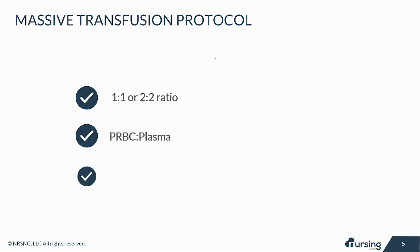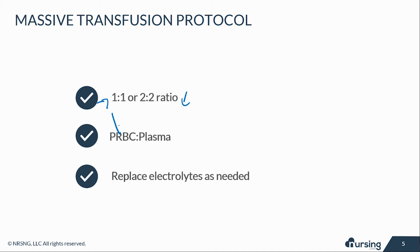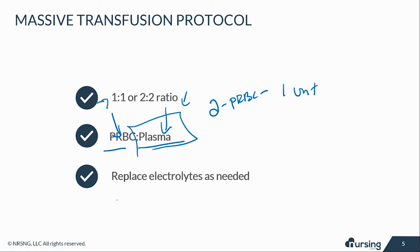As soon as you know you need blood and you've activated the MTP and the blood bank is bringing it to you, a lot of hospitals will do either a one-to-one ratio or a two-to-two ratio — meaning for every unit of packed red blood cells, you give some plasma. If you give two units of packed red blood cells, you would give two units of plasma, or in some facilities, two units of packed RBCs to one unit of plasma. The point is you give plasma so that they don't bleed out. And then you obviously have to watch those electrolytes and replace them as needed.